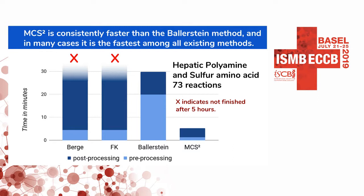We implemented four methods to make the comparison unbiased. Berge and FK algorithms are algorithms for hypergraph dualization. On the first network, the goal was reporting minimal cut sets when the target reaction is the first reaction. Berge and FK algorithm did not finish after five hours. However, the polarization method and our method were both able to report the minimal cut sets — the polarization method finished after half an hour, and our method finished in about five minutes.